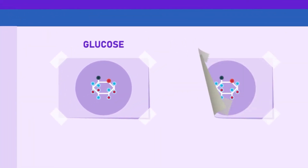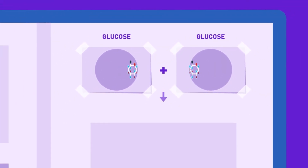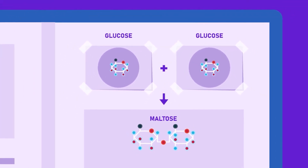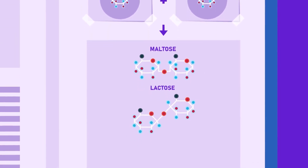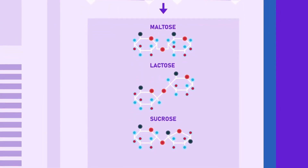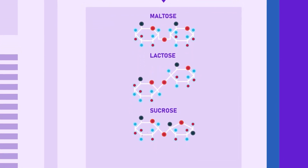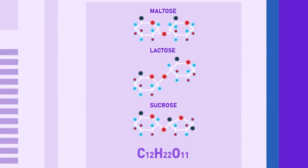Disaccharide molecules are made up of two molecules of simple sugars condensed together. The most common types of disaccharides have 12 carbon atoms, with the general formula C12H22O11.